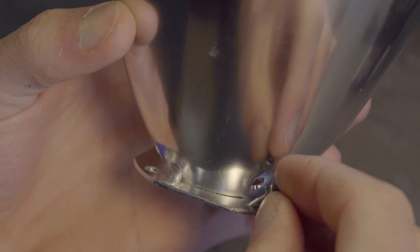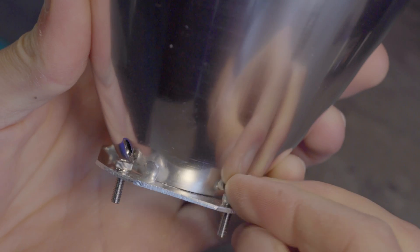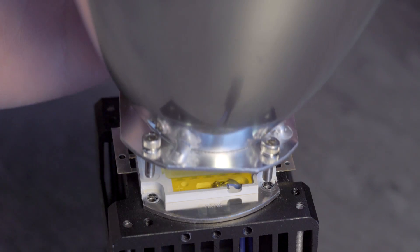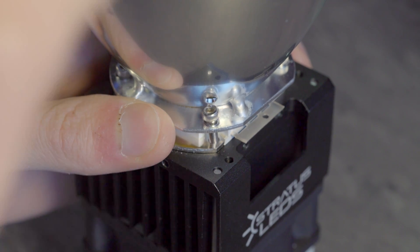Insert the screws into the mounting holes on the parabolic reflector. Carefully lower the parabolic reflector onto the LED emitter and align the screws with the holes in the LED emitter and heat sink.